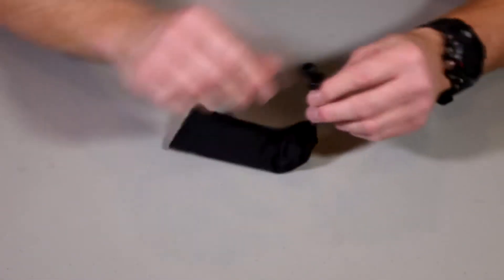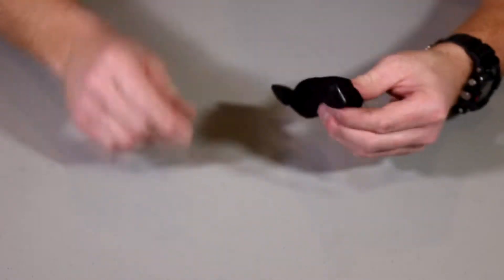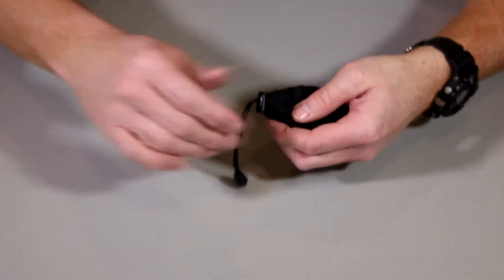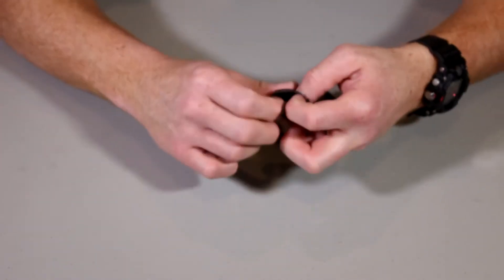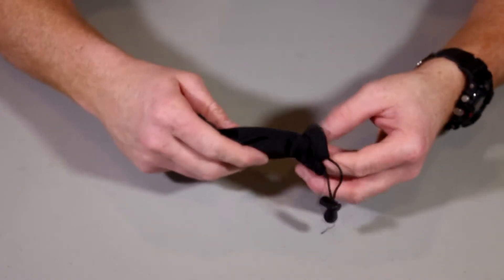So again a little toggle here. A little keeper. Keep the bag nice and closed. So that's kind of a neat feature. Soft case. Never had a knife that came with a soft case before. So it's interesting.